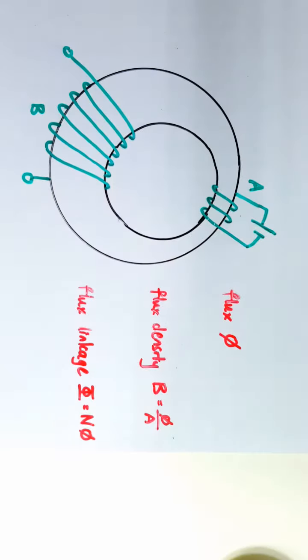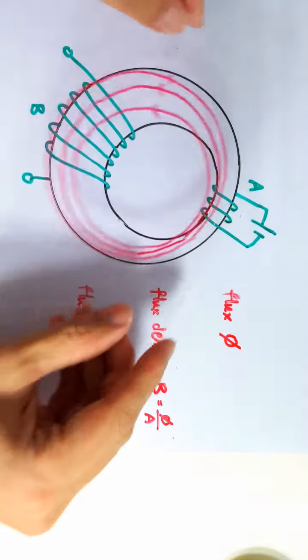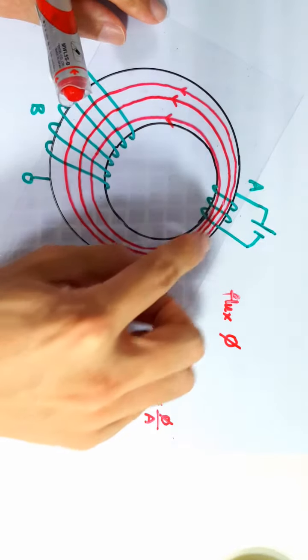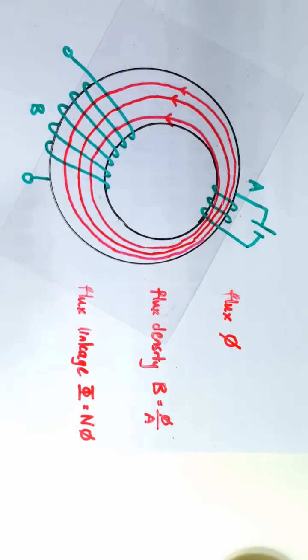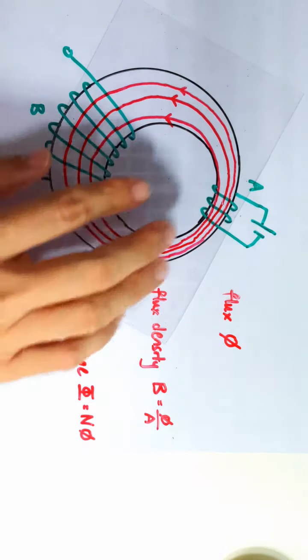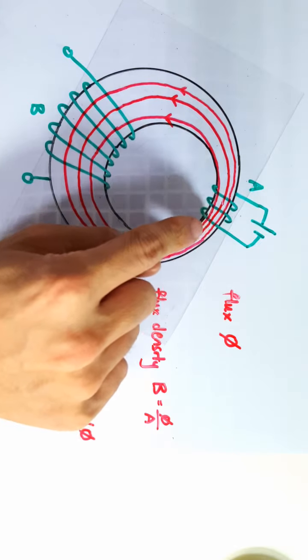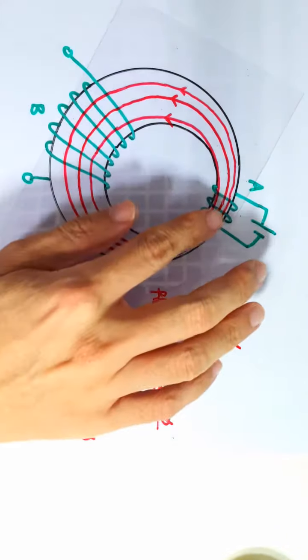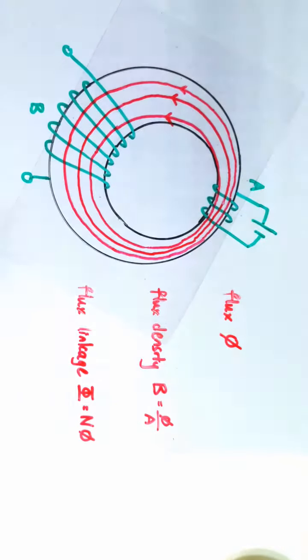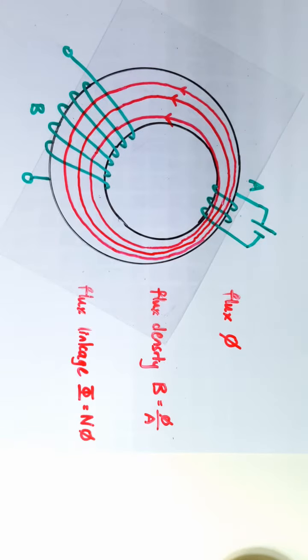However, if the soft iron core is there, then the magnetic flux produced by this coil will look like this. Because iron has a very much higher magnetic permeability compared to air, the flux will all tend to flow within the iron. None of the flux will actually flow to air which has a much lower magnetic permeability.